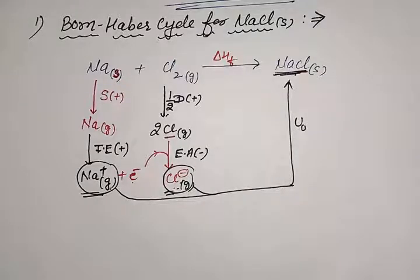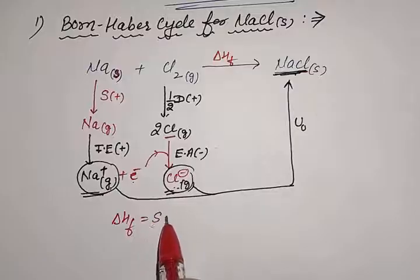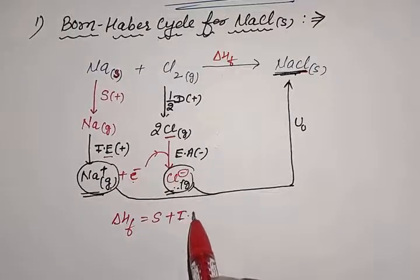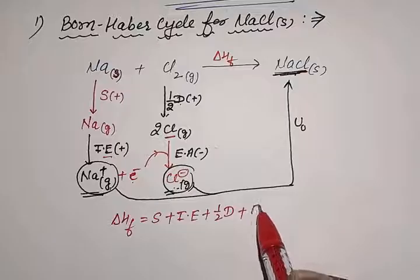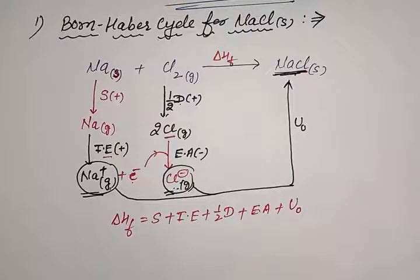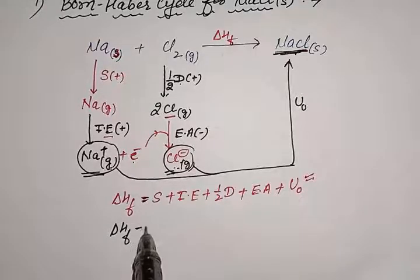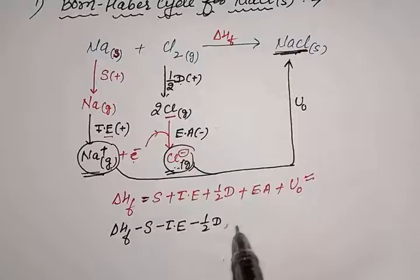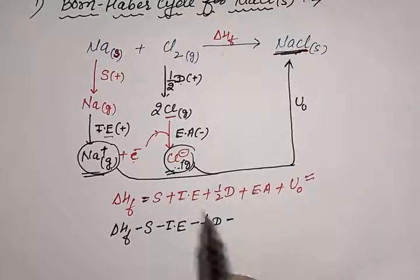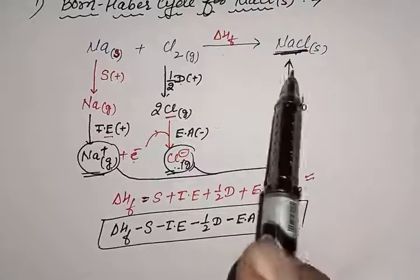For the Born-Haber Cycle, the enthalpy of formation ΔHf is equal to the enthalpy of sublimation plus enthalpy of ionization plus one-half dissociation enthalpy plus electron affinity plus lattice enthalpy. So if we are interested to determine the lattice enthalpy, it becomes: lattice enthalpy equals ΔHf minus enthalpy of sublimation minus enthalpy of ionization minus one-half enthalpy of dissociation minus electron affinity.